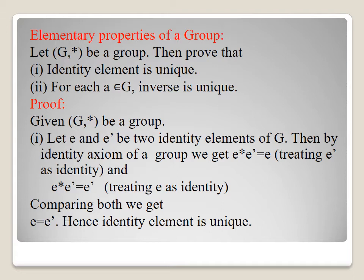Elementary properties of a group: let (G, star) be a group. First, prove that the identity element is unique. Second, for each a in G, the inverse is also unique. Proof: let e and e' be two identity elements of G. By the identity axiom, e star e' equals e (since e' is an identity) and e star e' equals e' (treating e as identity). Comparing both, we get e equals e'. Hence the identity element is unique.